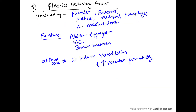Examples include: alpha — IL-8; beta — MCP-1, RANTES, eotaxin; gamma — lymphotactin; CX3C — fractalkine. Another mediator is the platelet activating factor (PAF), produced by platelets, basophils, neutrophils, macrophages, mast cells, and endothelial cells. Its functions include platelet aggregation, vasoconstriction, and bronchospasm. At low concentrations, it may cause vasodilation and increased vascular permeability.